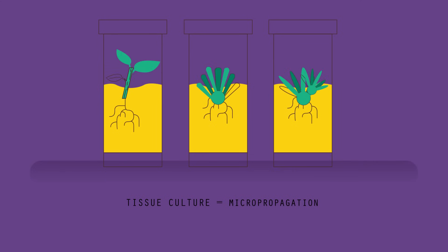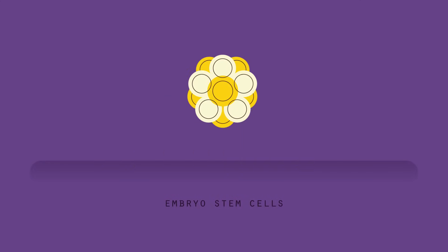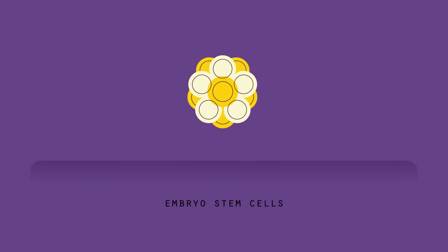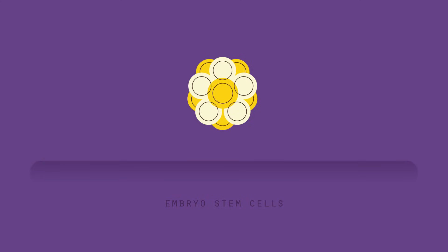Animals can also be cloned, but different techniques need to be used. In animals, only embryo stem cells have the capability to differentiate into all the different types of cells found in an adult. There are two methods you can use.